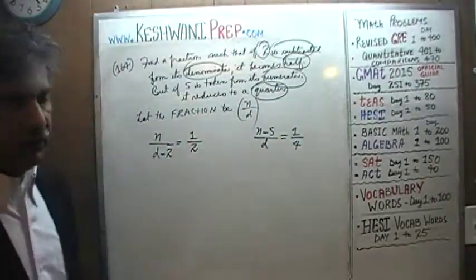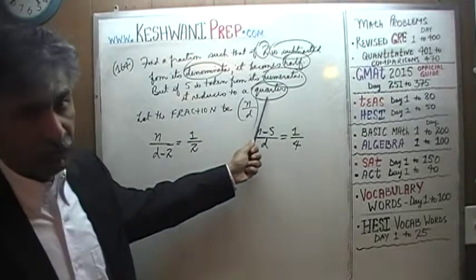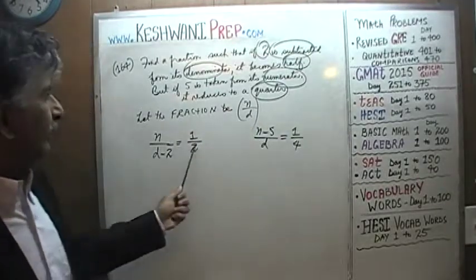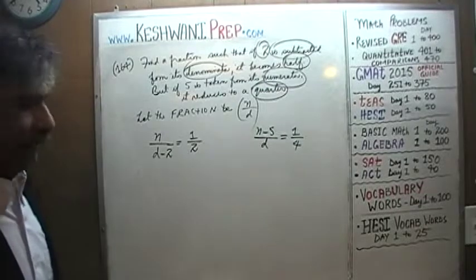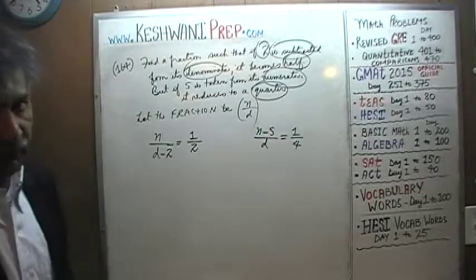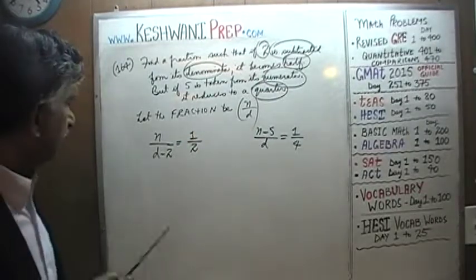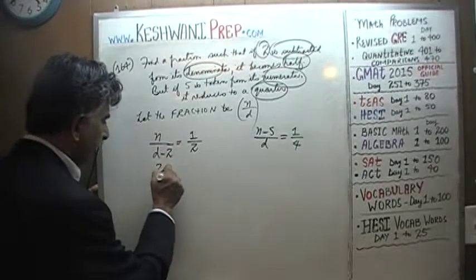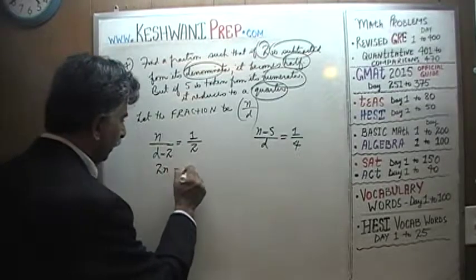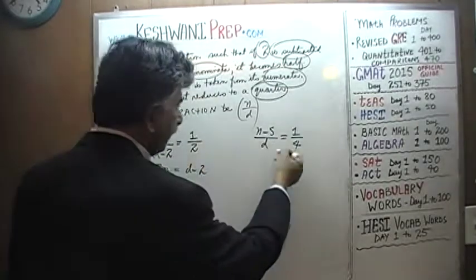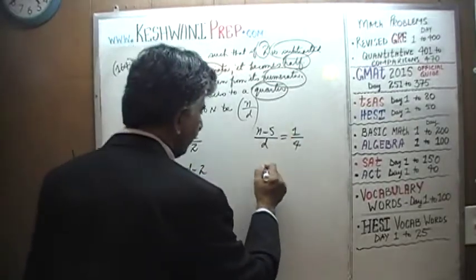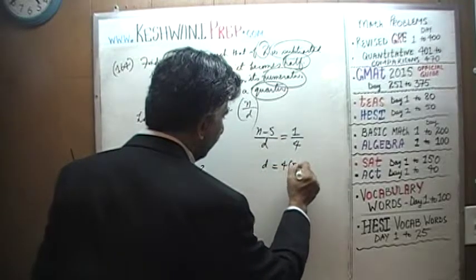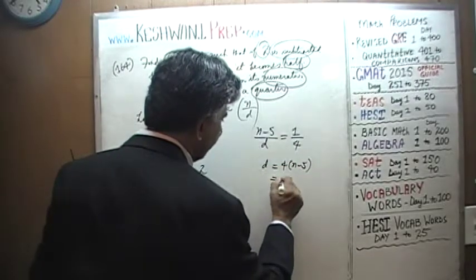It doesn't say reduces to a quarter of the original fraction — it says it reduces to a quarter. Same thing with the first condition: it becomes half, not half of the original fraction, it just becomes half. Cross multiply. If we cross multiply, we find 2 times n equals d minus 2. And here if we cross multiply, we find that d equals 4 times (n minus 5).